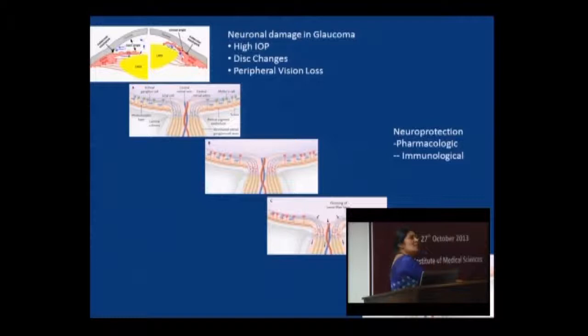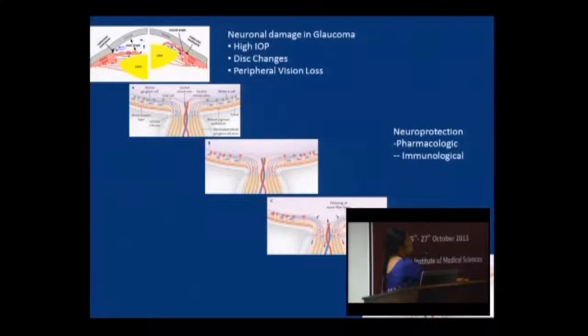Glaucoma is another neural disease. We were taught as students that glaucoma is high intraocular pressure — but high intraocular pressure is just a symptom. What actually happens is neuronal damage and loss of ganglion cells, and here there is no regeneration. So: penny saved, penny earned. If you save ganglion cells through neuroprotection — both pharmacological and immunological — that is the way forward, not neural regeneration.